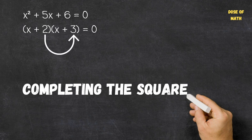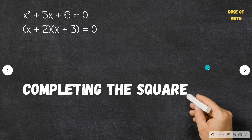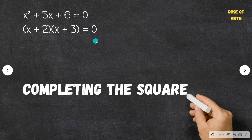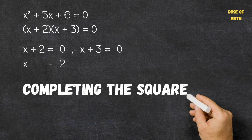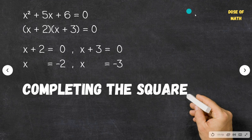So we can then write two separate solutions for this equation because we have two cases where the equation will be satisfied. We could have x plus 2 being equal to 0, or we could have x plus 3 being equal to 0. Using inverse operations, subtracting 2 from both sides gives us x equals minus 2, and for the second solution we have x equals minus 3.